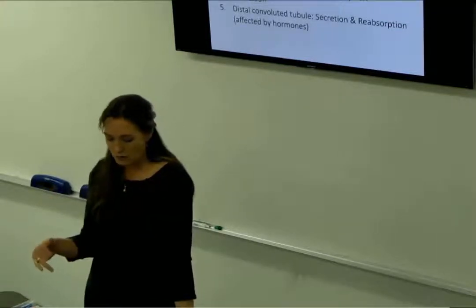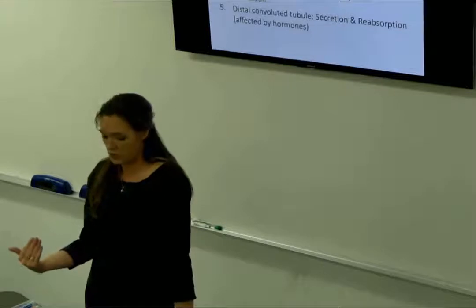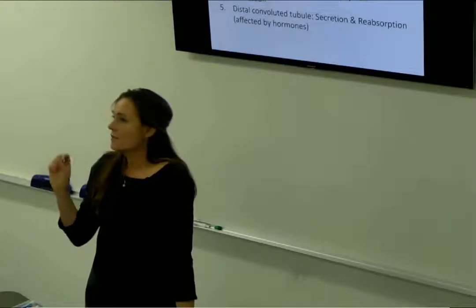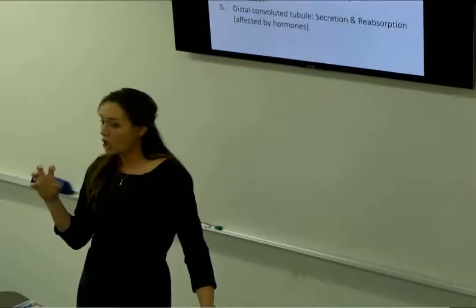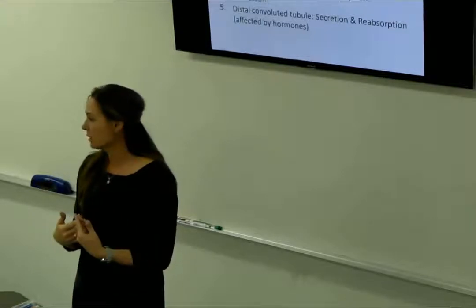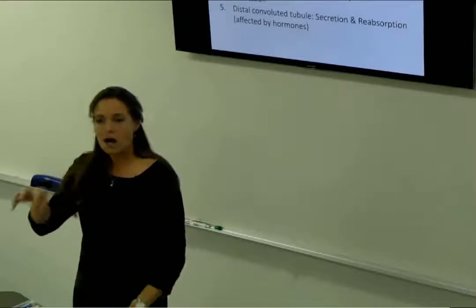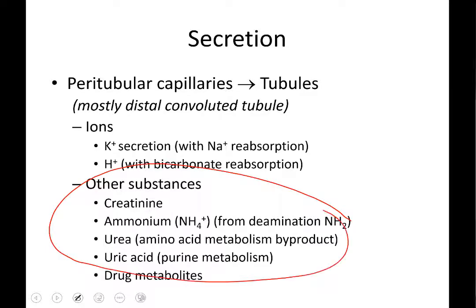The loop of Henle has reabsorption of water in the descending limb because of the simple squamous, and reabsorption of sodium in the ascending because of simple cuboidal. The distal convoluted tubule has two jobs. The first job is secretion — any large waste that never got filtered at the glomerulus but is still in the blood in the peritubular capillaries gets brought down into the tubule. You'll want to know what substances are secreted.